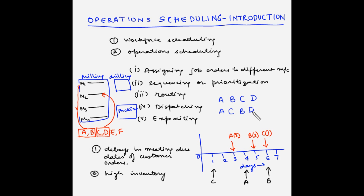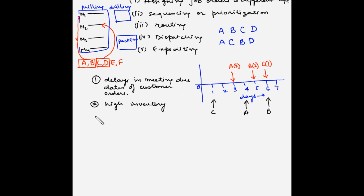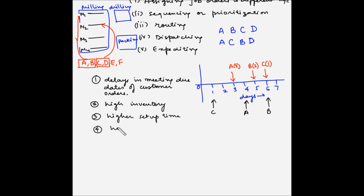If there is no proper scheduling, another disadvantage is higher setup time of machines. Because the setup time is higher, this leads to a higher overall completion time of all the jobs. So the third disadvantage is higher setup time of machines, and the fourth disadvantage is higher overall completion time.